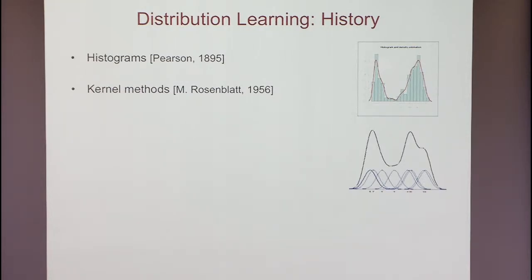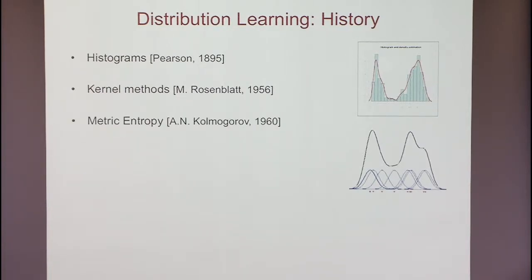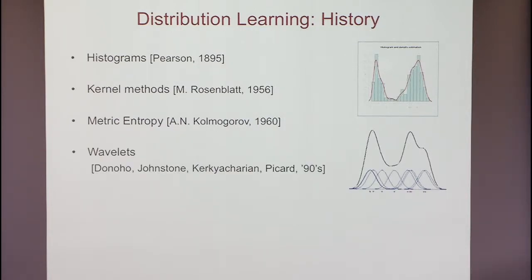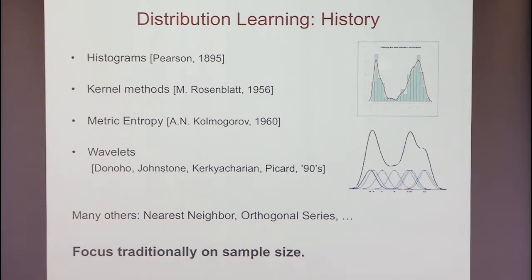The refinement of histograms is the method of kernels: take the empirical distribution and add some kind of smoothing over every sample, hoping that the smoothed density is close to the true target. There's also the metric entropy method published by Kolmogorov, nonlinear techniques developed in the 90s by Donoho and others based on wavelets, and many more. The focus traditionally in statistics has been on sample size, not on rigorously analyzing the computational complexity of the relevant algorithms — and that is what we as computer scientists are trying to do.